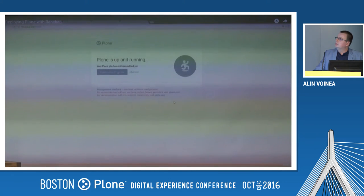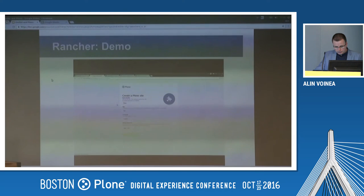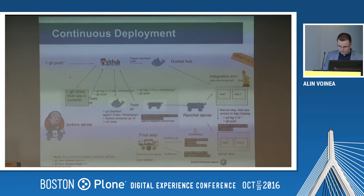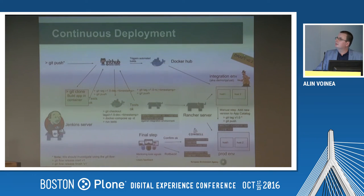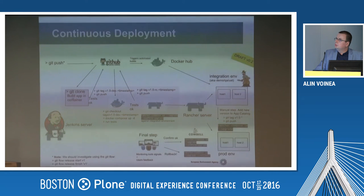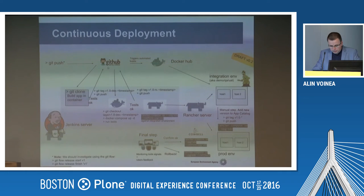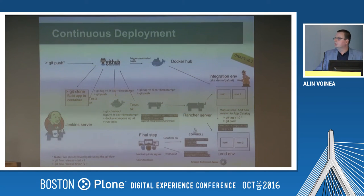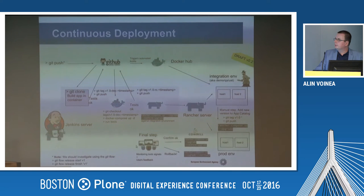Now I have Plone running and the load balancing is up and running. If I go there, I can create my Plone site. This is our plan for the EA website — it's in a draft version two, but we plan to do continuous deployment with GitHub, Docker, and Jenkins. There are also tools from Rancher like Cowbell — you push to GitHub and it goes to production after going through checks, tests, and final steps.